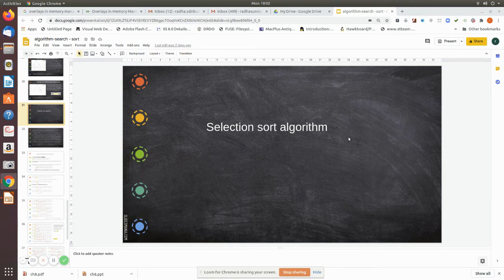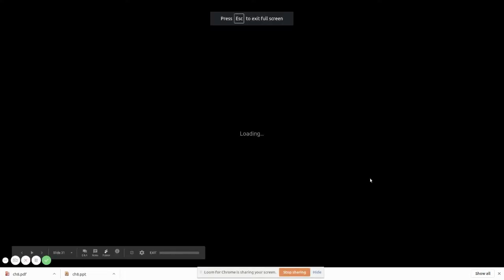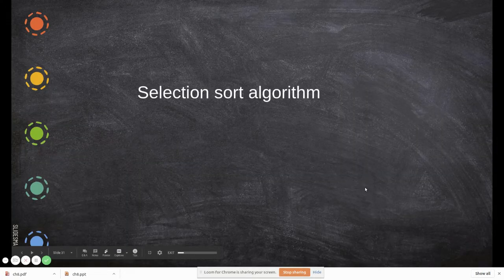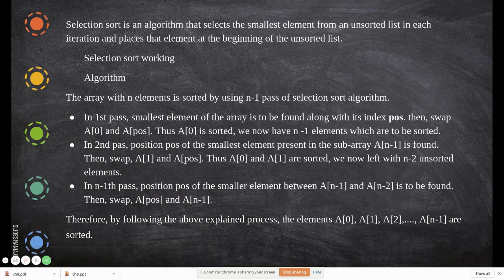In this video we are going to see the selection sort algorithm, which comes under the divide and conquer technique. As the name suggests, a particular value is selected and it will be checked with the first value, second value, third value, and so on, and then it will be placed in the correct place.